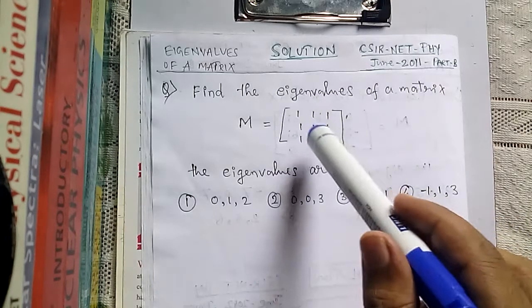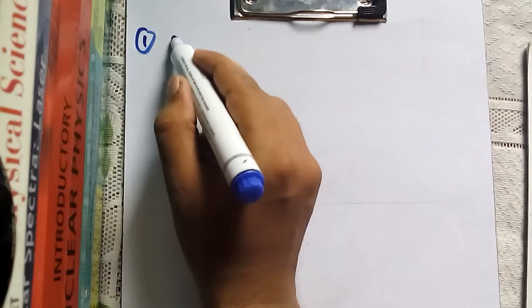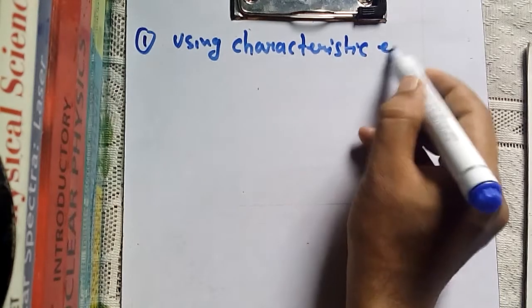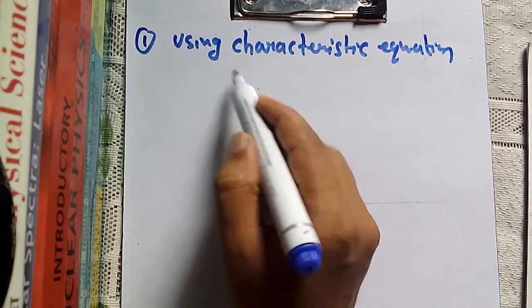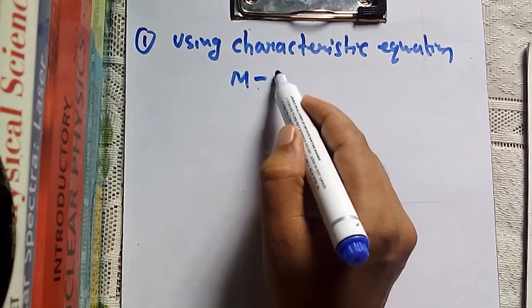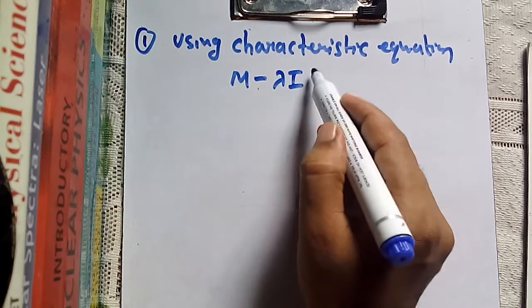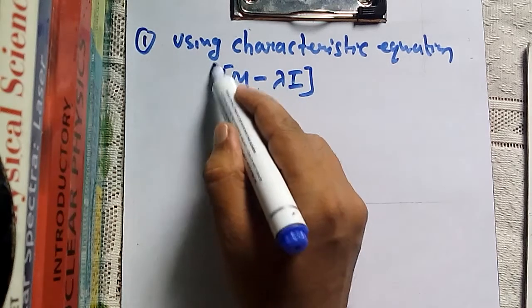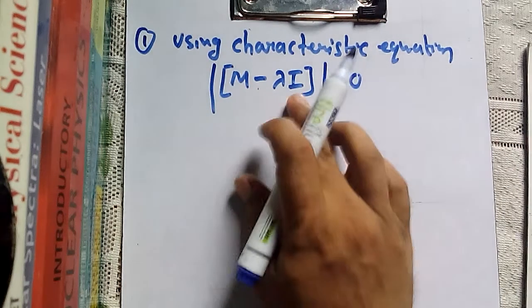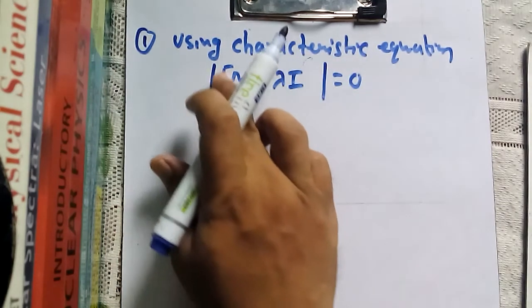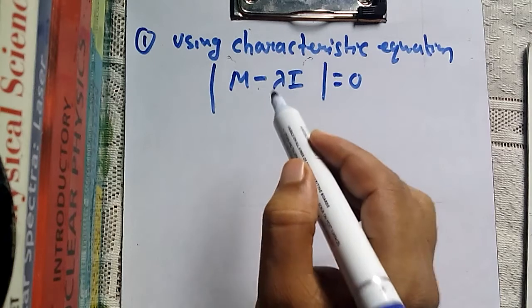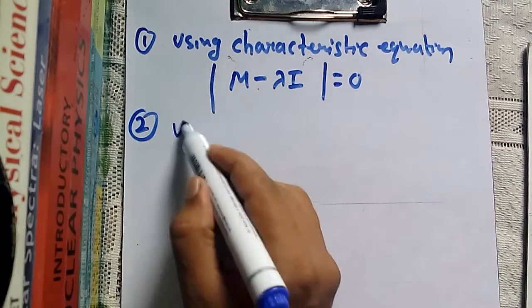Finding eigenvalues of a matrix can be done by two basic methods. The first is by using the characteristic equation, where we compute the determinant of (M minus lambda I) equals zero — M is the given matrix, lambda is a constant, and I is the identity matrix. The second method is using the characteristic polynomial.